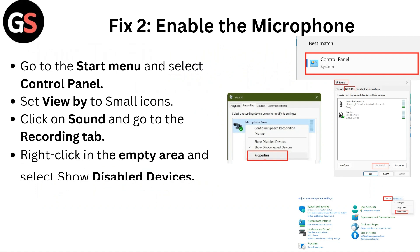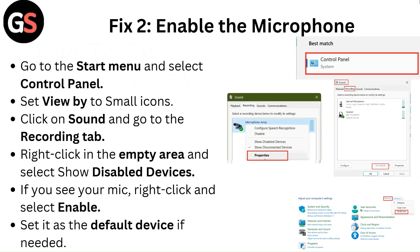Fix 2: Enable the microphone. Go to the Start menu and select Control Panel. Set View By to Small Icons. Click on Sound and go to the Recording tab. Right-click in the empty area and select Show Disabled Devices. If you see your mic, right-click and select Enable. Set it as the default device if needed.